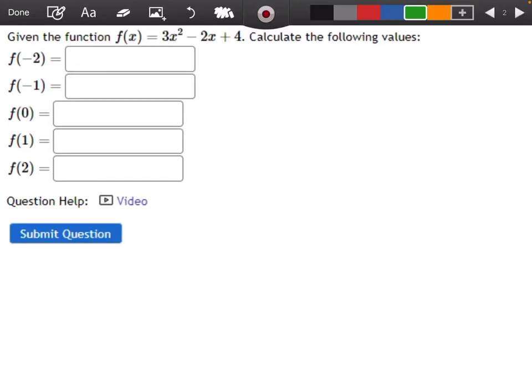All right, this is one of the questions out of the review for test number two. It says, given the function f of x equals 3x squared minus 2x plus 4, we want to calculate the following values. So we want to find f of negative 2, f of negative 1, f of 0, f of 1, and f of 2.